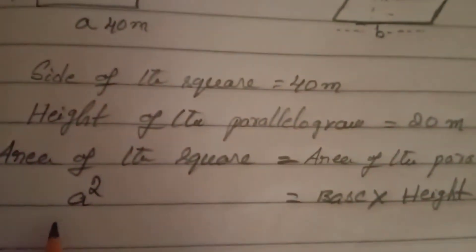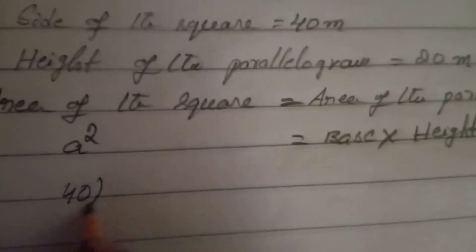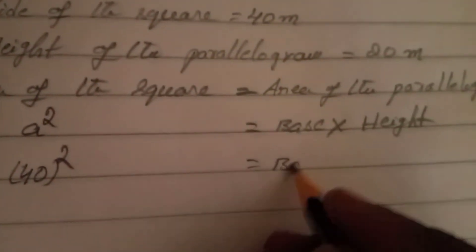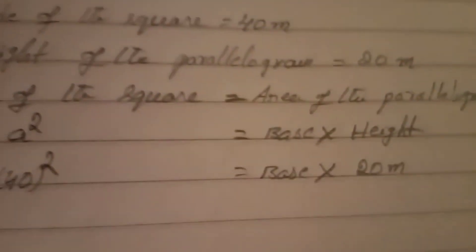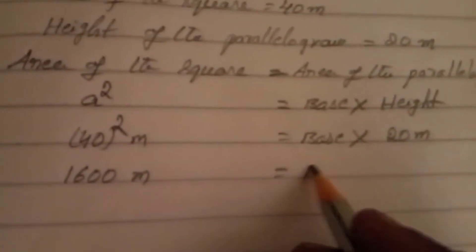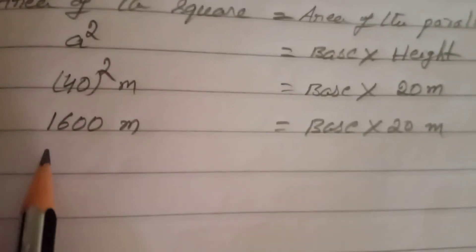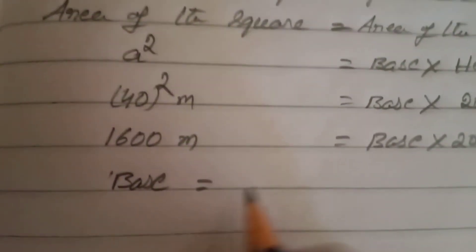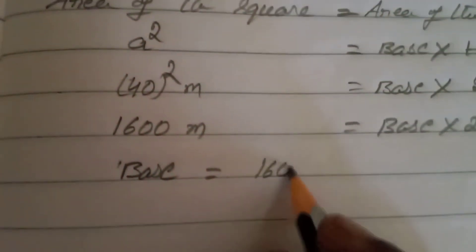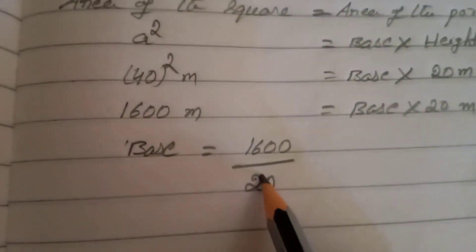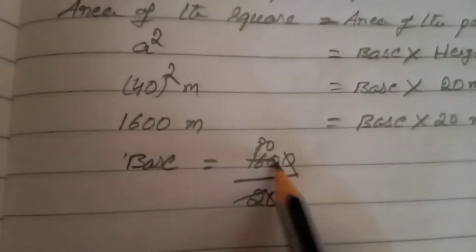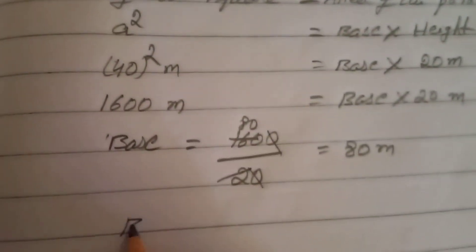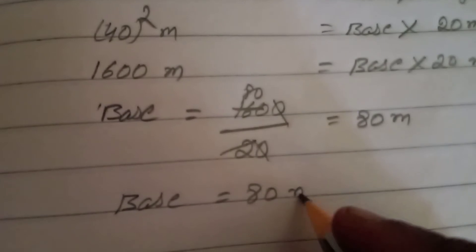If I use 40 meters, a square is 40 squared. So 40 squared equals base times height 20 meters. 40 into 40 is 1600, equal to base into 20. Base equals 1600 divided by 20, which gives base equal to 80 meters.